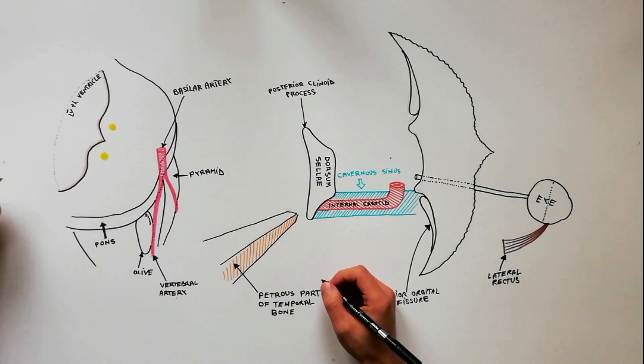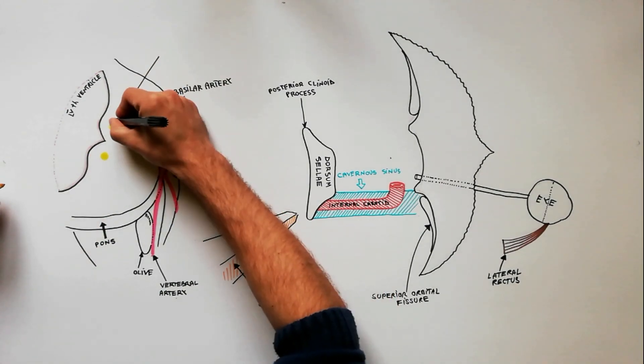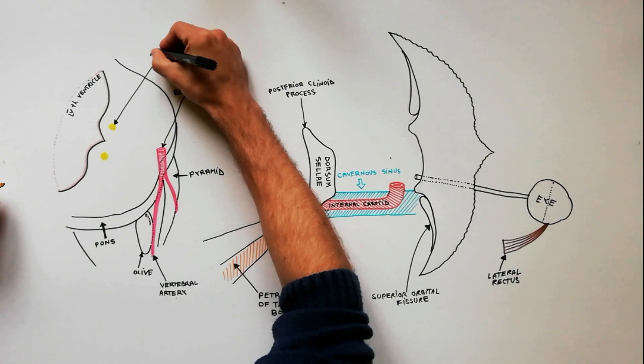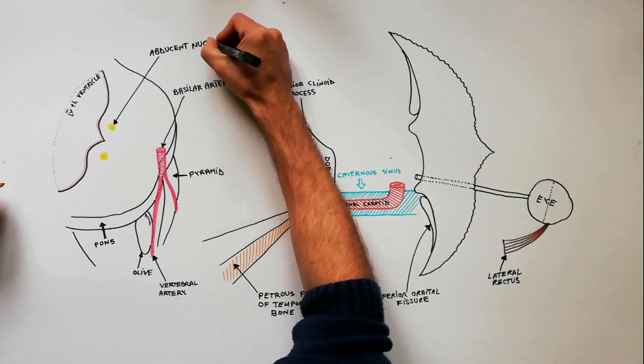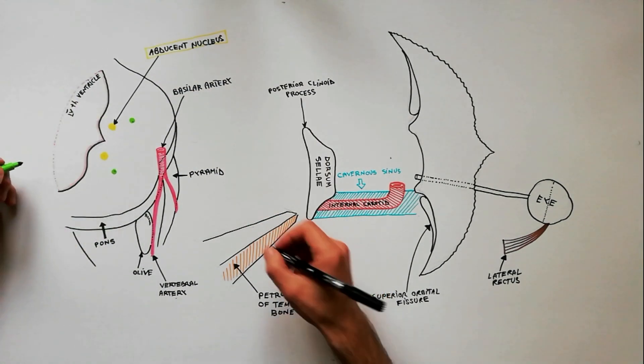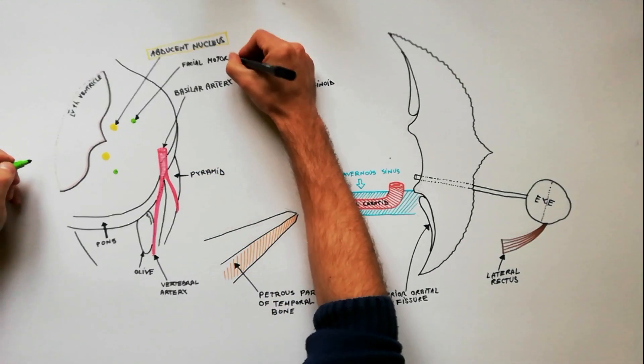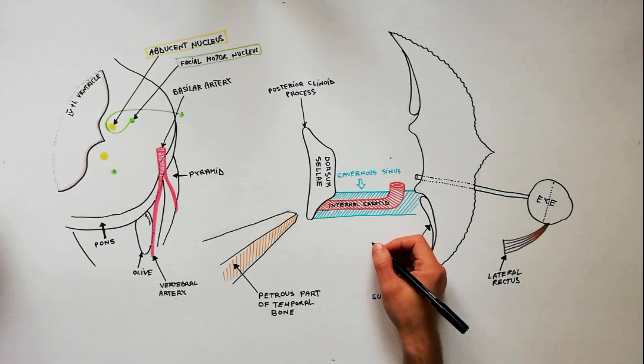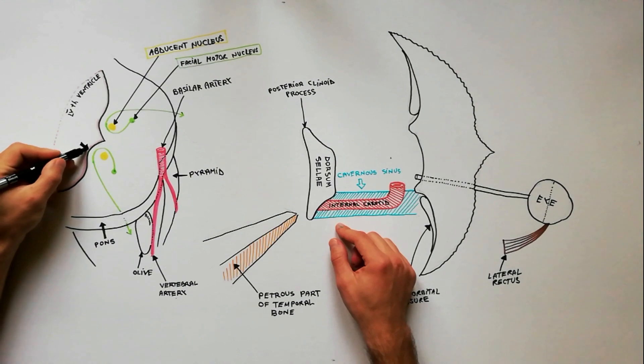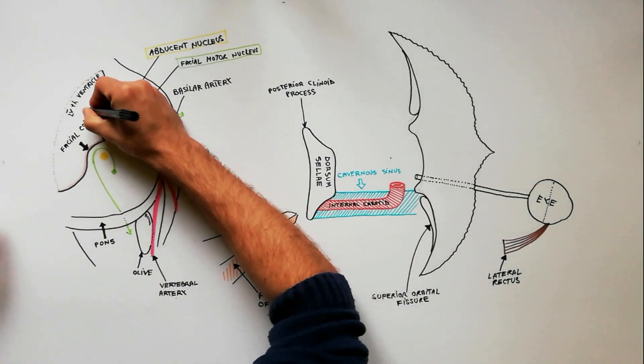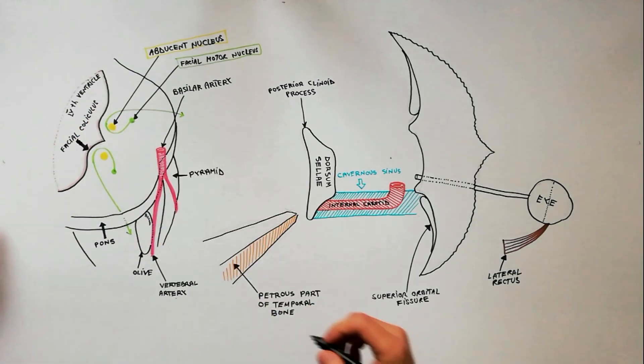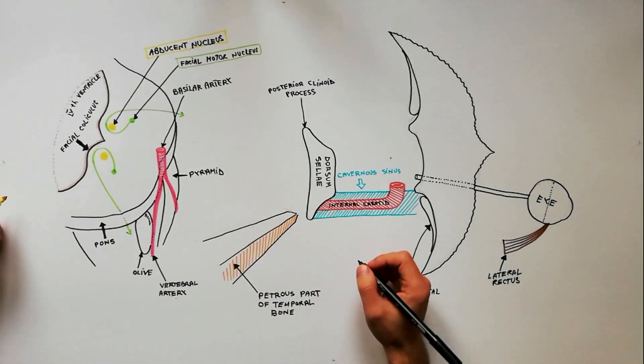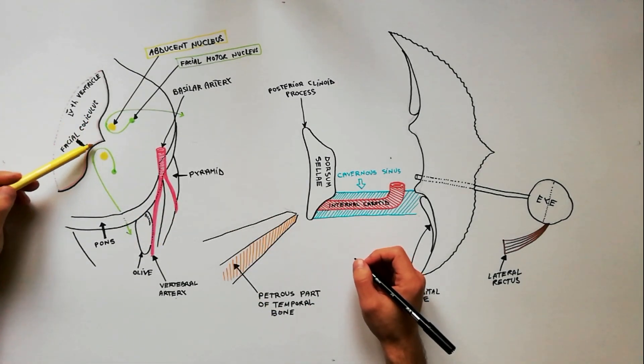Its general somatic efferent fibers arise from the abducens nucleus in the pons. Inside the pons, fibers from the facial motor nucleus of the facial nerve loop over the abducens nucleus. Thus, the facial colliculus is formed. The facial colliculus is an elevated area located on the pontine tegmentum in the floor of the fourth ventricle.